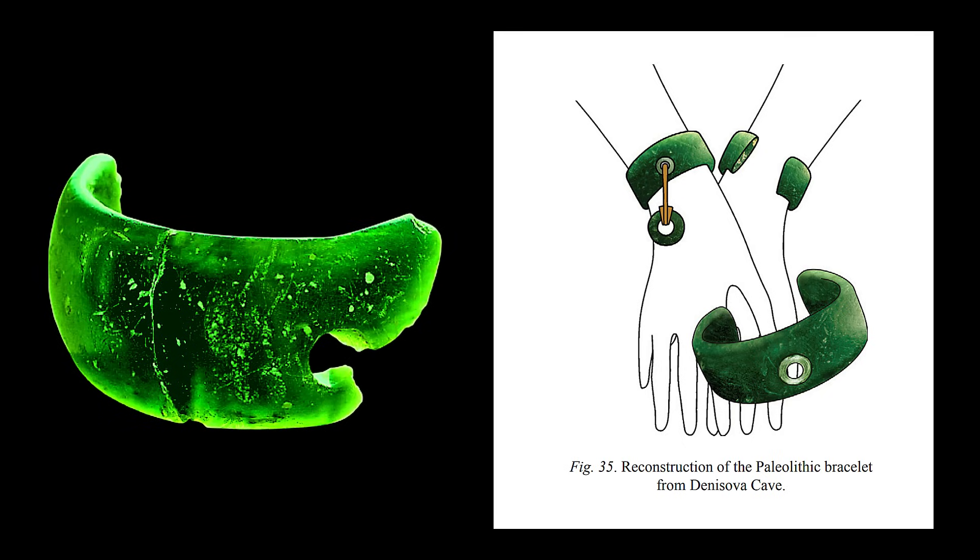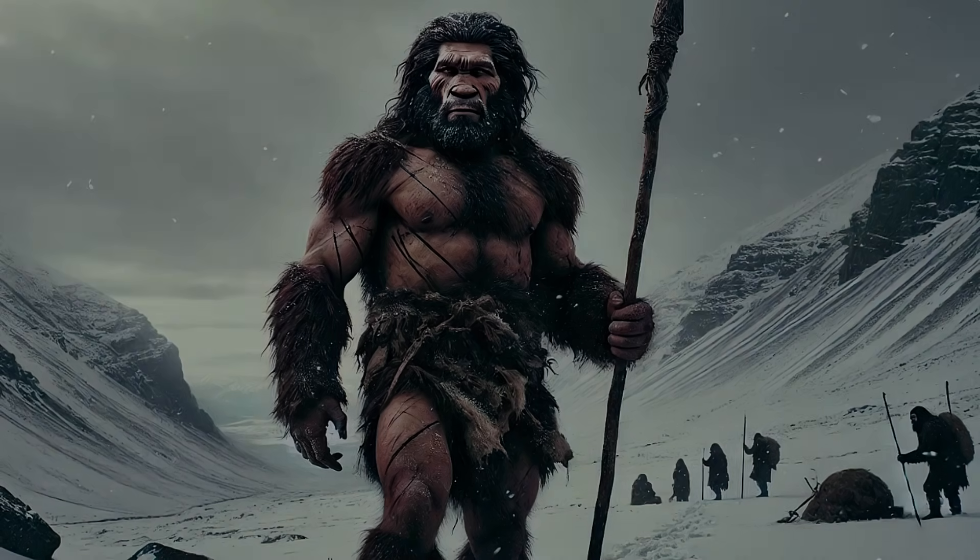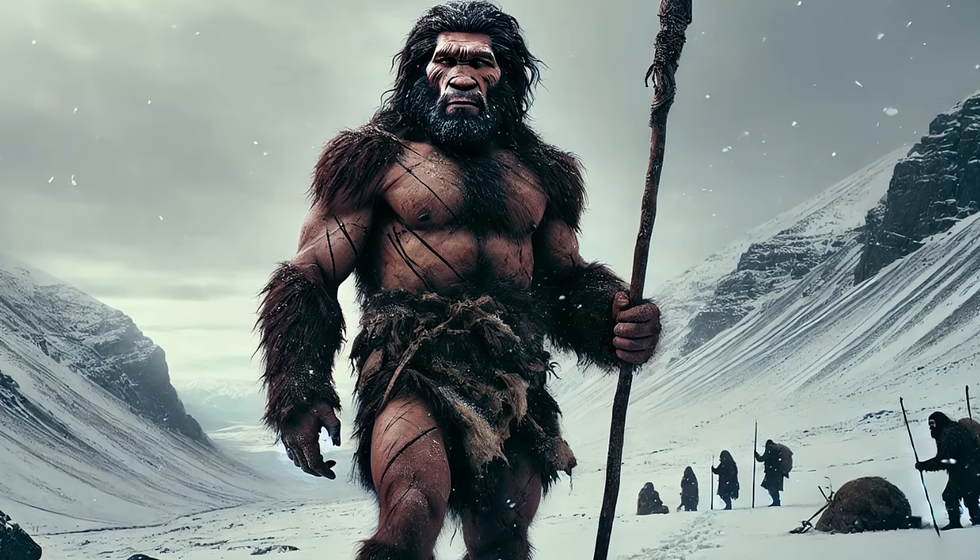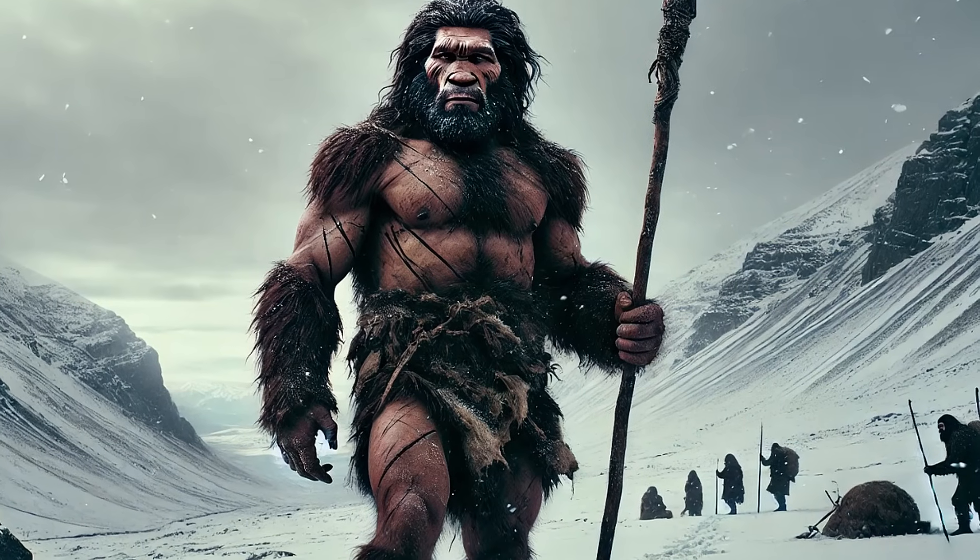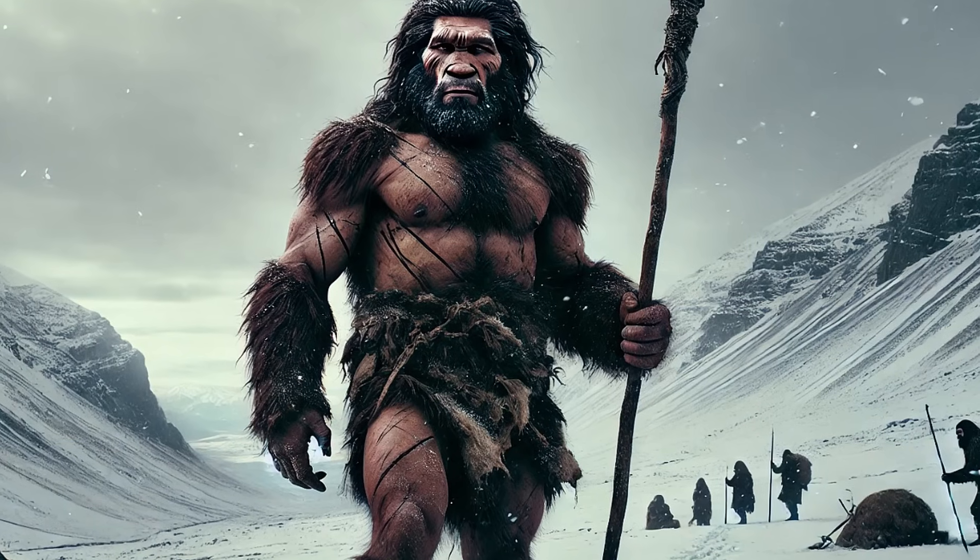The wrapping of a cord around the spindle could allow for rapid alternations of rotation direction, minimizing downtime. Additionally, using lubricated bearings, such as polished bone or smooth wood sockets, could reduce resistance, enabling faster rotations.